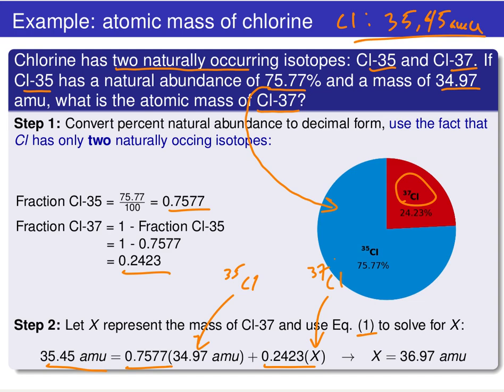Those are three different variations of average atomic mass problems. Remember, they all boil down to using the concept of a weighted average to find the average atomic mass for any element on the periodic table, where every different isotope that naturally occurs for a given element gives you an individual term in equation one.